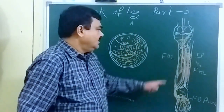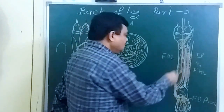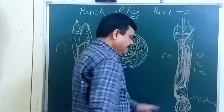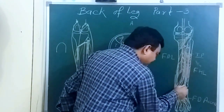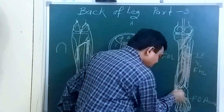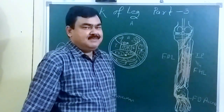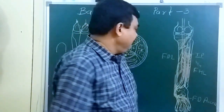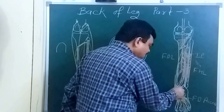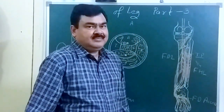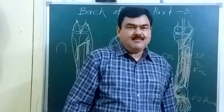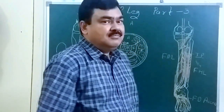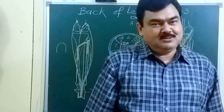In its course, the tibial nerve gives muscular branches to the muscles of the region. It also gives the medial calcaneal branch, which supplies the skin over the heel, and a branch to the ankle joint. This concludes the discussion of nerves and vessels of the back of the leg.